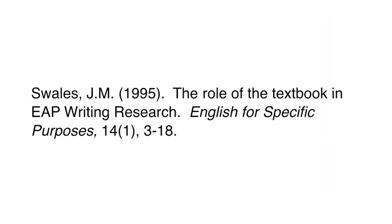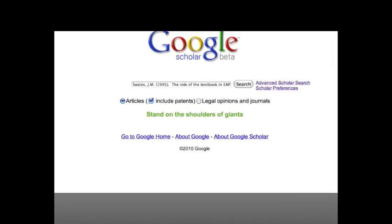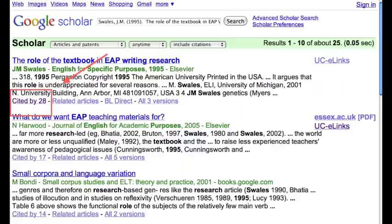The first step is to get the citation of the source you wish to paraphrase. Paste the source into Google Scholar. When you get your results, look for the cited by link. How many did you get? If you got none, then the source is probably fairly new, so you won't be able to use Google Scholar's help to paraphrase it.